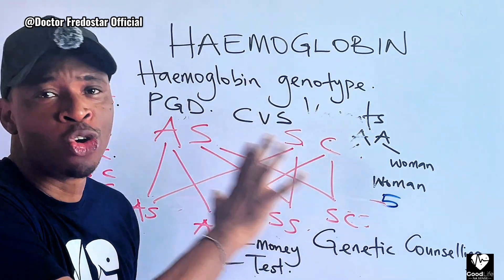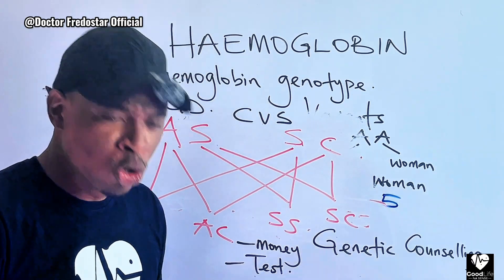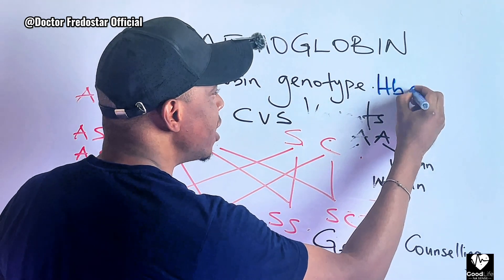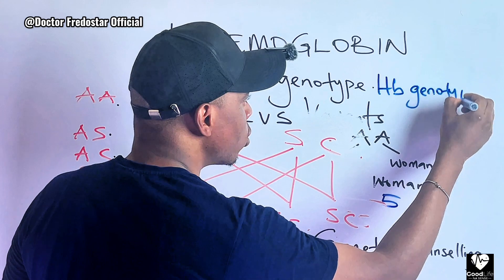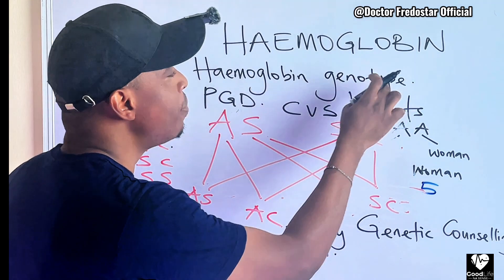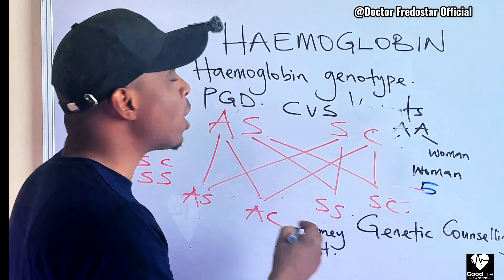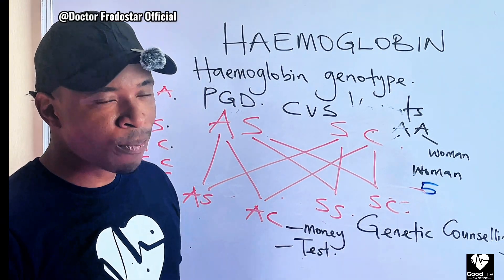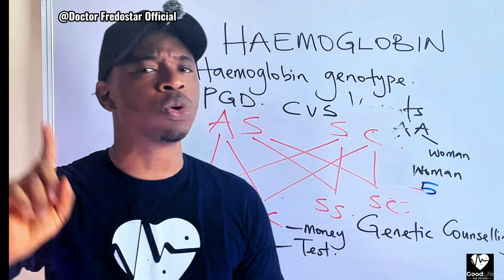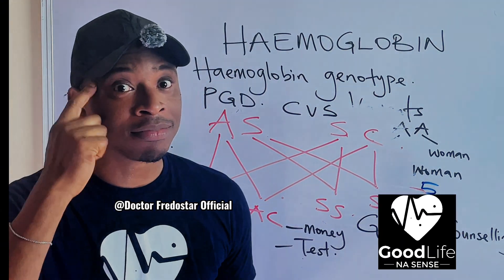This video is not a medical class — it's just to teach you and help you understand what hemoglobin genotype means. So anytime you go to check your genotype, tell them: 'I want to check my hemoglobin genotype.' Find out what your own hemoglobin genotype is. If it's clear or not clear, if you learned anything, put it in the comment section. Don't forget to share this video so other people can come and learn. Good life is everything.